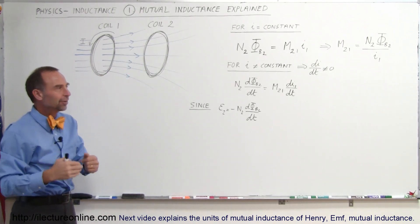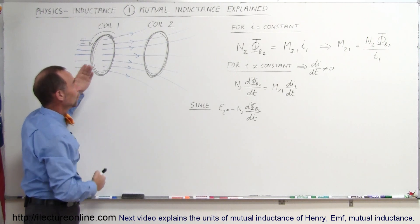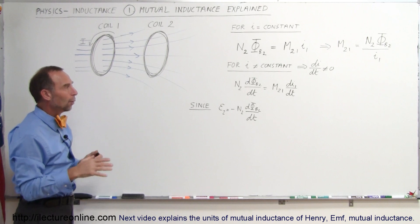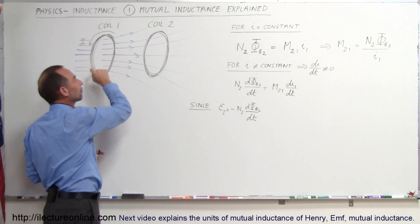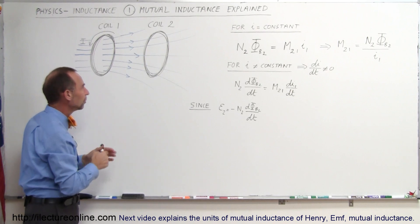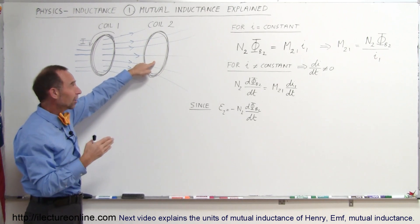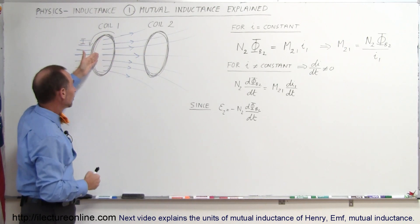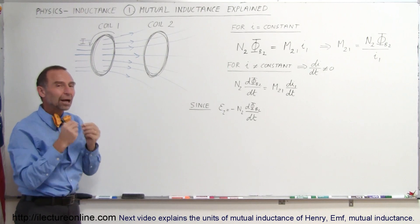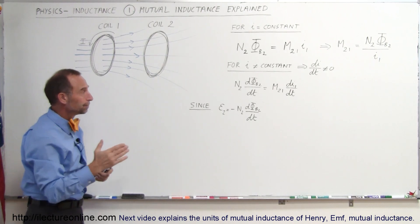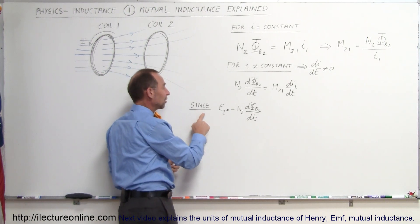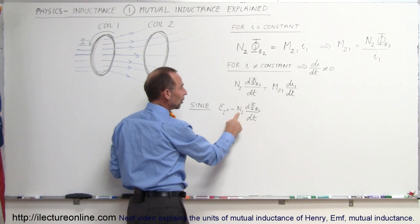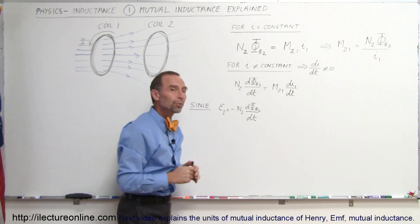In the steady-state situation, nothing happens in the second loop — we simply know there is some mutual inductance present. But when the current in the first loop begins to change, the amount of magnetic flux going through the second loop changes as well. Increasing the current increases the flux; decreasing the current decreases the flux in the second loop. This begins to have a real effect on the second loop. Faraday's law tells us that the EMF induced in a coil equals the number of loops times how fast the flux changes per unit time.